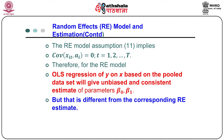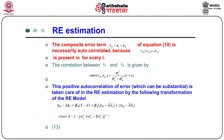The composite error term v_it = aᵢ + εᵢₜ is necessarily autocorrelated. The covariance between v_it and v_is is equal to σₐ² divided by (σₐ² + σε²) for r not equal to s. This positive autocorrelation of the error, which can be substantial, must be addressed.